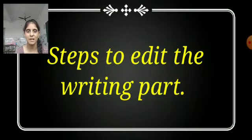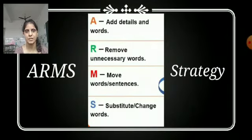We are given two strategies. One is ARMS, another one is CUPS. Let's start with ARMS. Where A stands for add details and words. We are going to add some more words, add details about our ideas we thought about in the first step. We can add some more details about that. R, remove unnecessary words. As I told you, there are possibilities to make mistakes. It is possible that we have repeated something, some words or sentences. So here in this step, what will we do? We are going to remove those words and sentences.